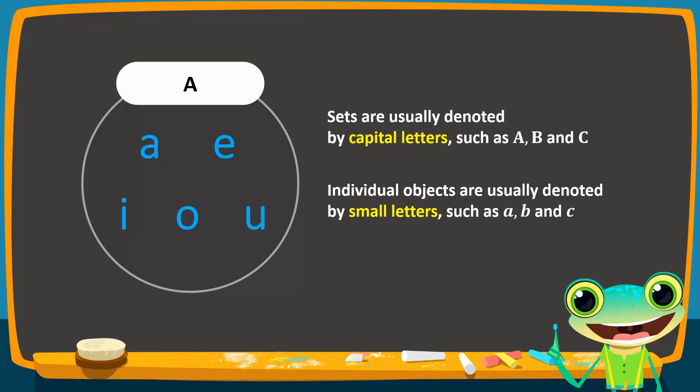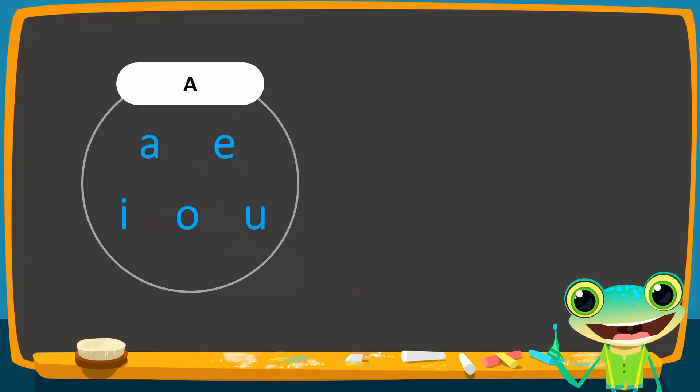Now the objects of a set have a special name. They are called the elements of the set or the members of the set. Therefore, in this example we say that set A has five elements. Finally, we want to show the relationship between the set and its elements. To show that an element belongs to a set, we use this symbol which means 'is a member of' or 'belongs to.' For instance, to show that element e belongs to set A, we write this expression.